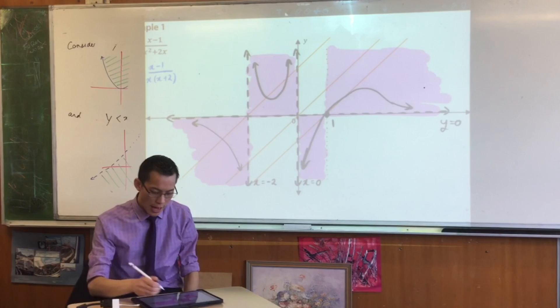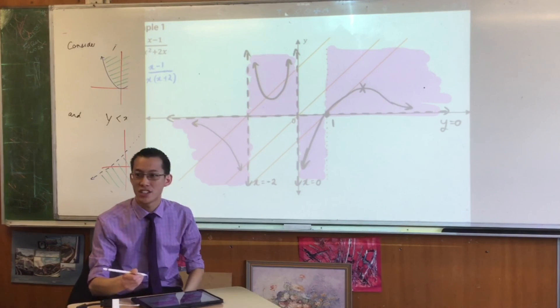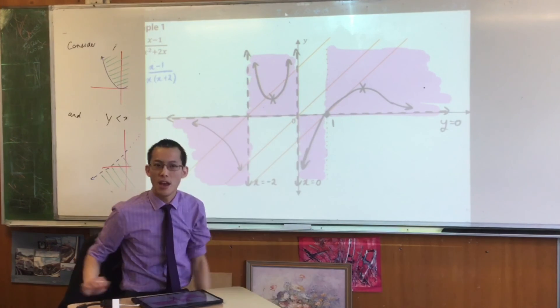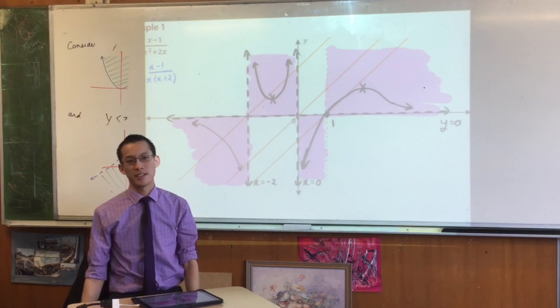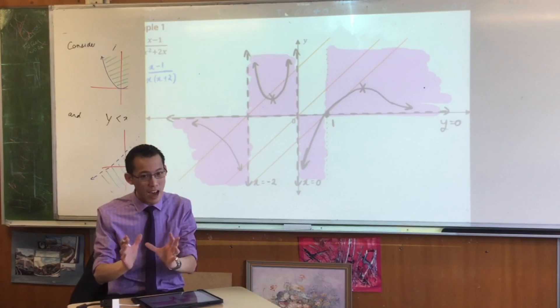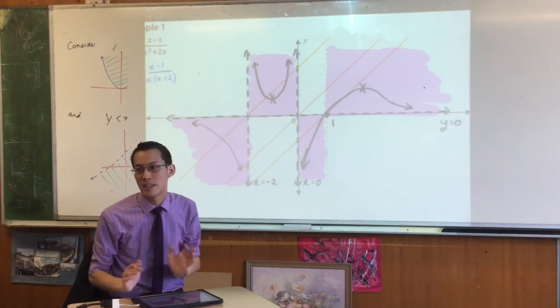I pointed this out before, that exact position where it turns around, and this exact position over here where this turns around, later on when we learn about calculus and differentiation, we'll have tools for finding those spots. But right now, I just want to get the general shape. That's all this is about.